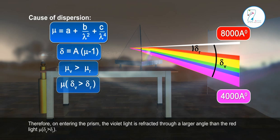Therefore, on entering the prism, the violet light is refracted through a larger angle than the red light, thus δᵥ > δᵣ.